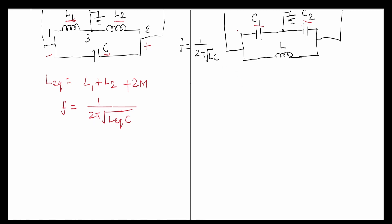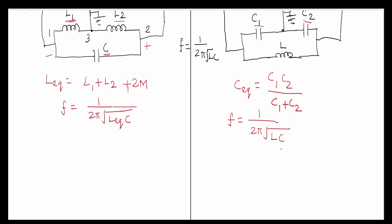In the case of the Colpitts oscillator, there are two capacitors. So instead of C, use C_equivalent — but C_equivalent is not C1 + C2; it is C1·C2 / (C1 + C2). The frequency of oscillation is F = 1 / (2π√(L · C_eq)), where L is the single inductor and C_eq = C1·C2 / (C1 + C2).